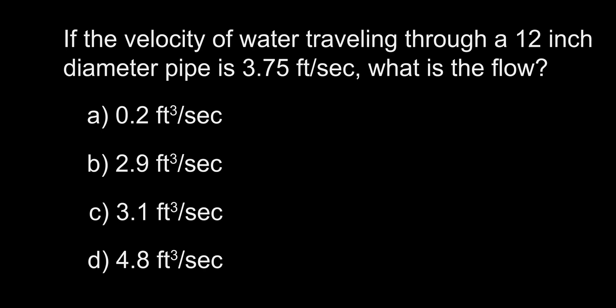If the velocity of water traveling through a 12-inch diameter pipe is 3.75 feet per second, what is the flow? A. 0.2, B. 2.9, C. 3.1, D. 4.8 cubic feet per second.